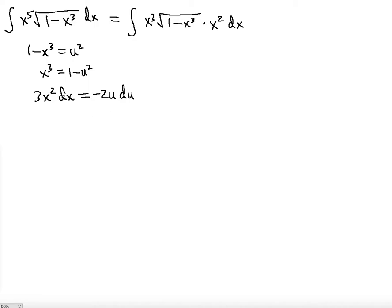So basically, now you can solve for this part. Notice that this part matches with this part. So if you divide both sides by 3, x squared dx is going to be negative 2 thirds u du.